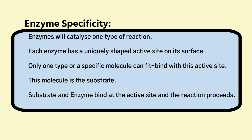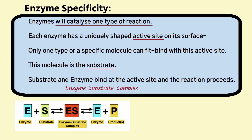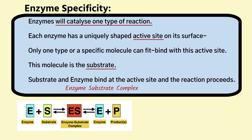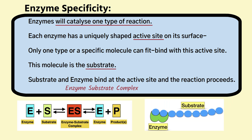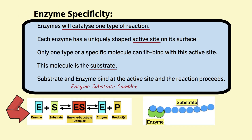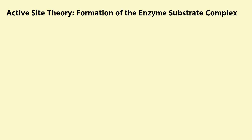The active site will only bind with one specific type of molecule — this is the substrate. The substrate binds with the active site, forming the enzyme-substrate complex, which is key to the reaction proceeding. If the substrate cannot bind with the active site, there's no reaction — that's why enzymes are so specific. In your exam, always refer to the enzyme-substrate complex, and note that the enzyme is unchanged at the end of the reaction. The products are formed and the enzyme is released.